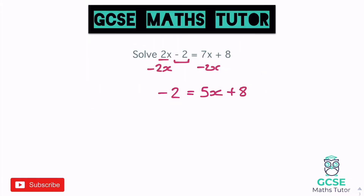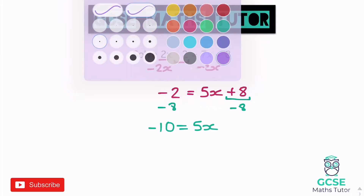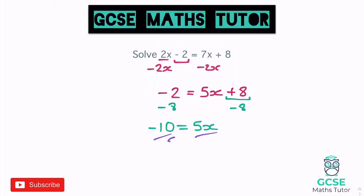We've got the x's on the right-hand side, so we want to get rid of this plus 8. To get rid of a positive 8, we're going to subtract 8 from both sides. Negative 2 take away 8 is negative 10, so negative 10 equals 5x. Then finish it off just like normal — we're going to divide by 5. Negative 10 divided by 5 is negative 2, so negative 2 equals x, and we can just rewrite that as x equals negative 2.